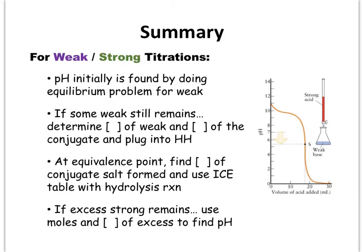In the buffering region you have to determine the concentration of the weak acid or base, determine the concentration of the conjugate that formed, and then plug these values into the Henderson-Hasselbalch equation. If you're at the equivalence point, you need to figure out the concentration of the conjugate salt that formed and use an ICE table with the hydrolysis reaction.